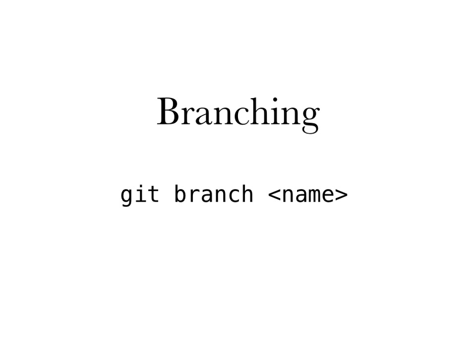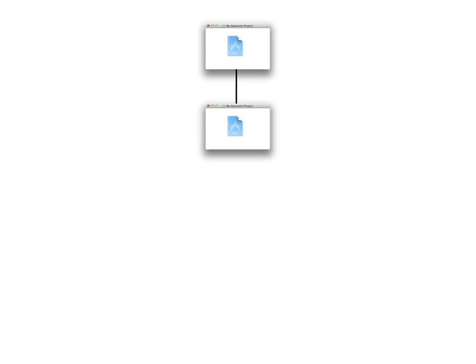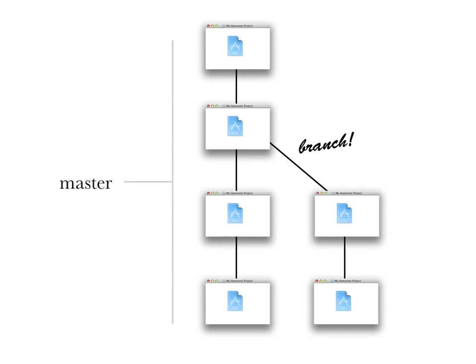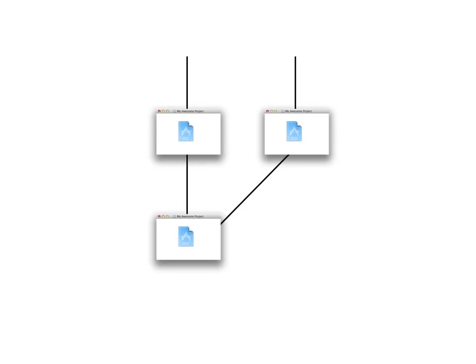Branches are something that often really scares people when it comes to version control systems, but they're not scary at all. You often have an idea and want to try it out, or you want to keep bug-fixing one part of the project while making a new feature for another part. Branches are a great way of doing that — they don't interfere with each other. I can create a new branch at any point and add commits to it while keeping working in the other branch as well. This main branch is called master.